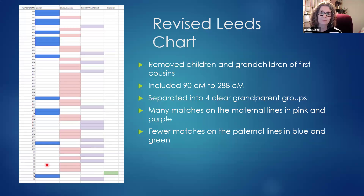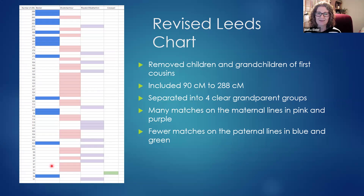This made a big difference in my analysis of Lucretia's DNA. When I first saw that chart with seven columns and crazy colors, I thought maybe there was pedigree collapse going on. But in reality, I just needed to remove the children and grandchildren of first cousins.